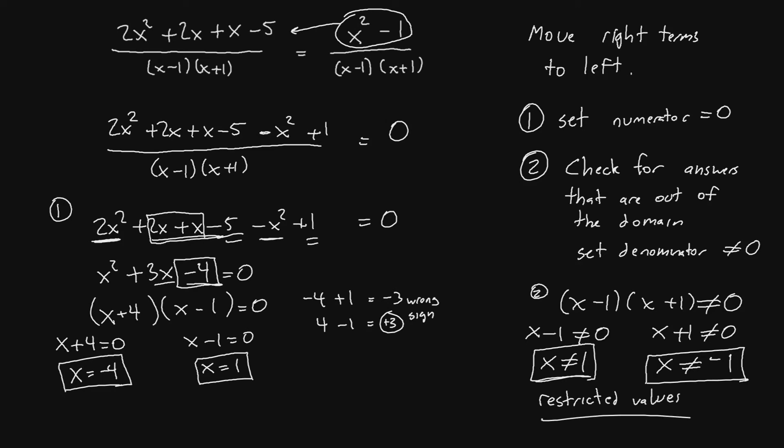So, notice that one of our restricted values came up as one of our answers. We've said x is not equal to 1 and yet we came up with that in part 1 of this question, that means that this x equals 1 is a false answer. So, the only true answer is going to be x equal to negative 4 and that's what we'll give as our final answer. x is equal to negative 4.